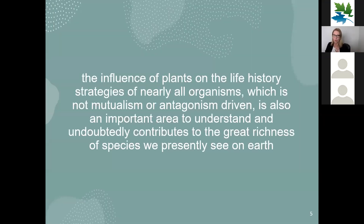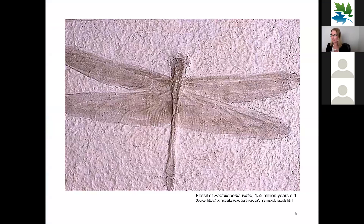An example of an antagonistic interaction: the dead red spruce trees in Alberta caused by spruce budworms, which extract resources from the tree, damaging or even killing it. But what about everyday interactions that are not mutualism or antagonism driven? These interactions undoubtedly contribute to the great richness of species we see on Earth today. One group that has been around for a very long time are Odonata — dragonflies and damselflies. Their ancestors, proto-Odonata, have been around since the Carboniferous period, 325 million years ago.